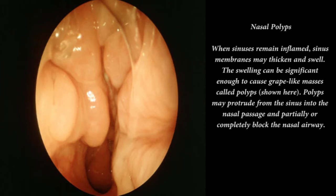Nasal polyps: when sinuses remain inflamed, sinus membranes may thicken and swell. The swelling can be significant enough to cause grape-like masses called polyps, shown here. Polyps may protrude from the sinus into the nasal passage and partially or completely block the nasal airway.